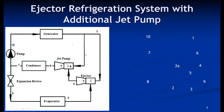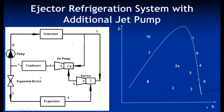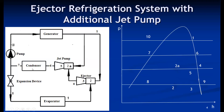Now we will discuss the thermodynamics and cycle working of this system using a pH diagram — that is, the pressure-enthalpy diagram. In this pH diagram, there are four pressure lines: first, the evaporator pressure, which is approximately the same as the ejector suction pressure; second, the jet pump pressure (the second ejector); third, the condensing pressure; and fourth, the generator pressure. This is also called a four-pressure system.